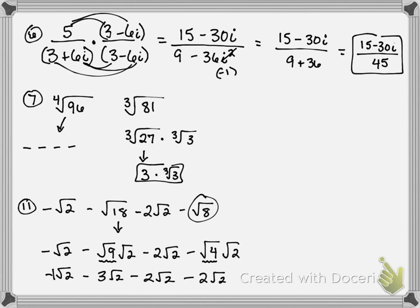So now I have a whole bunch of stuff with the same thing on the end. I've got negative 1 root 2, minus 3 root 2, minus 2 root 2, minus 2 root 2 — so all of this is just like terms. So if I take negative 1 minus 3 that's negative 4, negative 4 minus 2 is negative 6, negative 6 minus 2 — this is negative 8 root 2. It's almost like saying negative x minus 3x minus 2x minus 2x, that would be negative 8x — our x just happens to be square root of 2.